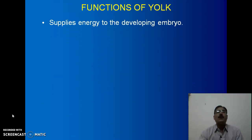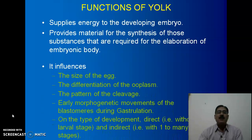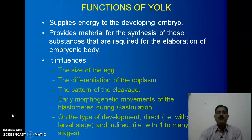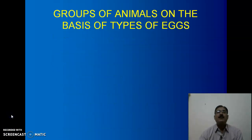The functions of yolk are: it supplies the energy for the development of the embryo; it provides material for the synthesis of substances required for the elaboration of the embryonic body; it influences the size of the egg, the differentiation of the ooplasm, the pattern of cleavage, early morphogenetic movements of the blastomeres during gastrulation, and the type of development. If the amount of yolk is greater, development will be direct with an absence of a larval stage; if development is indirect, it means the egg has a small amount of yolk.